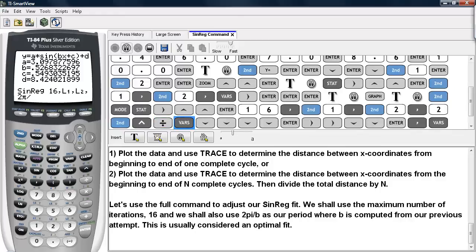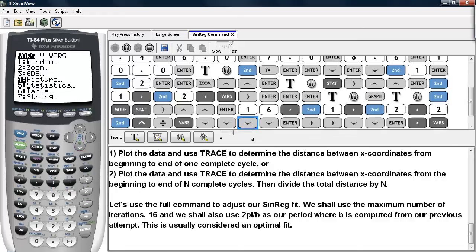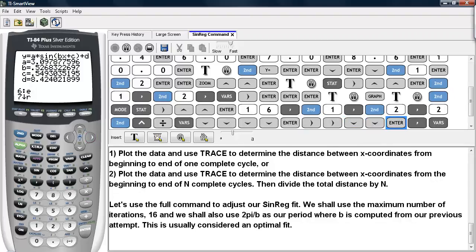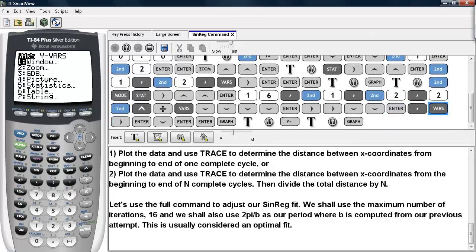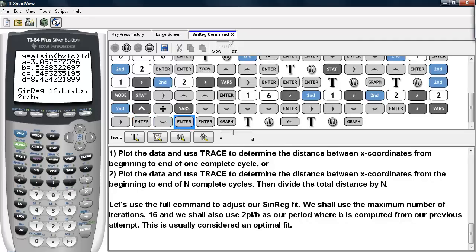Now the b can be found by hitting the vars button. And scroll down to statistics. Then you can scroll over to eq. And then you can select b from that list. And we'll store this result in the y2 slot so we can compare the two results together. And go ahead and do a graph.